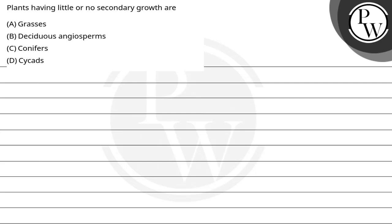Hello, let's read this question. The question says: plants having little or no secondary growth are — options: A) grasses, B) deciduous angiosperms, C) conifers, and D) cycads. So the key concept here is secondary growth.